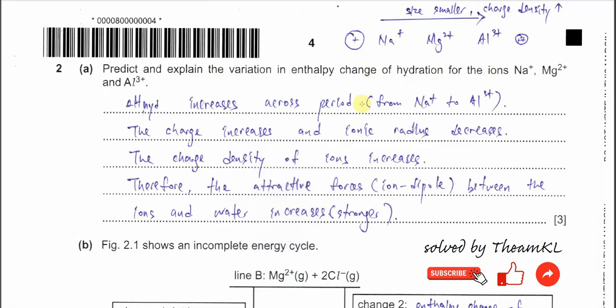First you need to understand what is the enthalpy change of hydration. The gaseous ion will dissolve in water and form bonding. When they form bonding, it will release energy, so therefore it is always exothermic. And if the attractions between the ion and water are stronger, then more energy is released — it is more exothermic.